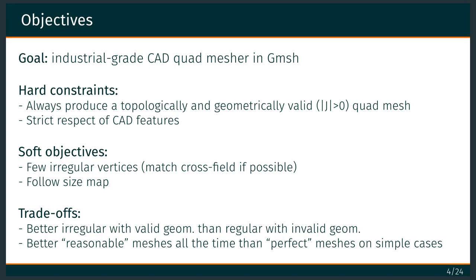To recap, the goal of this work is to build a good quad mesher in Gmesh, which always produces a valid quad mesh, topologically and geometrically, with strict respect of CAD features, and having a good structure with few irregular vertices.